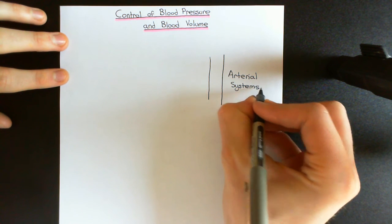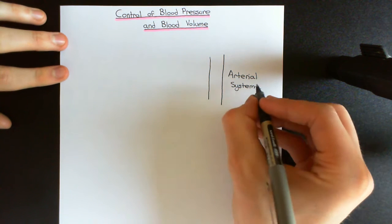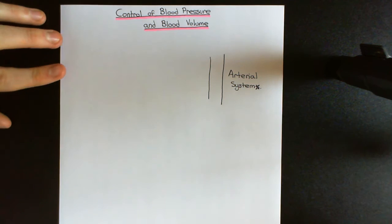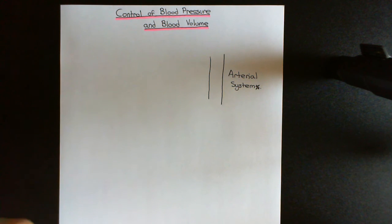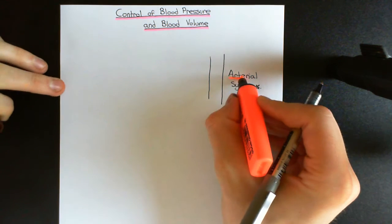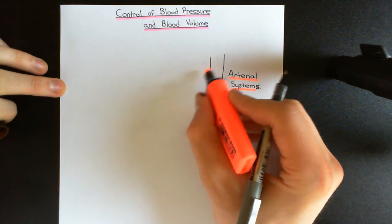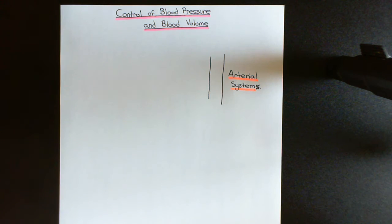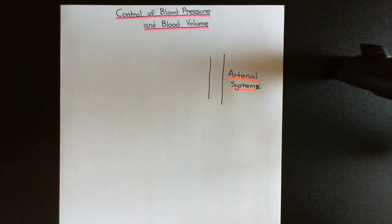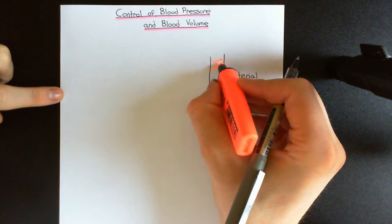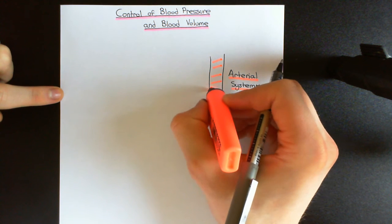I'm starting by drawing a tube that's going to represent the arterial system. By the arterial system, I mean all of the massive great arteries — for instance, the aorta is a massive great artery, along with all of the big branches off it: the carotid arteries, the renal arteries, the subclavian arteries — all of those are now just being represented by this great big tube here.